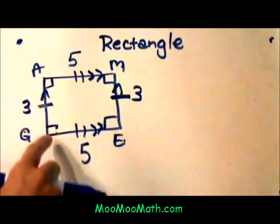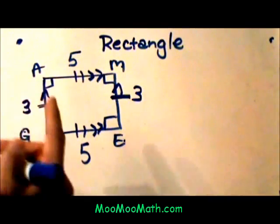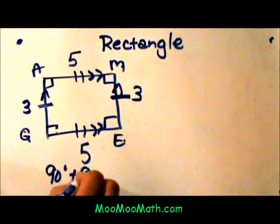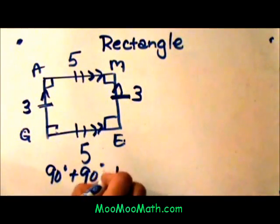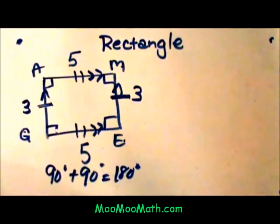And then the adjacent angles, the angles that are next to each other, are supplementary. 90 plus 90, that adds to 180. So we can see that the two angles that are next to each other are supplementary.